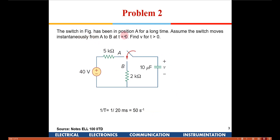Here it says the switch has been in position A for a long time, and then at t equals 0 the switch is moved towards B. We need to find out the expression for V. When it is put at position A, this capacitance will get charged to a voltage. The steady state voltage is 40 volts, so that entire 40 volts will be available across V because it has been kept there for a long time. After 5 tau, we can assume the initial voltage across the capacitor to be 40 volts.